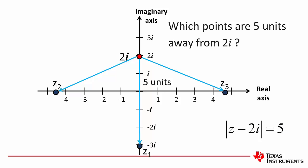But of course, there's a few more points that we could locate. There's one over here and here, and there's a whole bunch of them. And collectively, they form a circle. A circle which is centered at 2i with a radius of 5. And that's what that equation means.